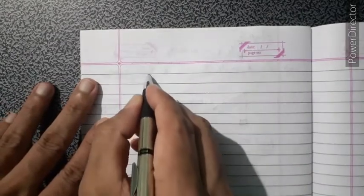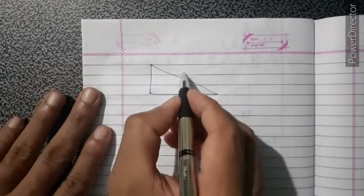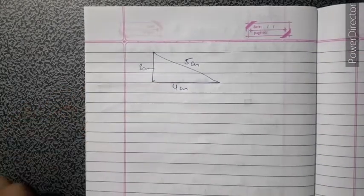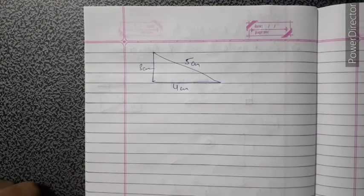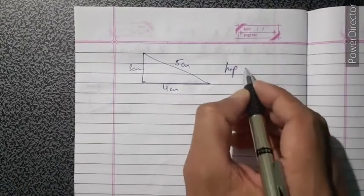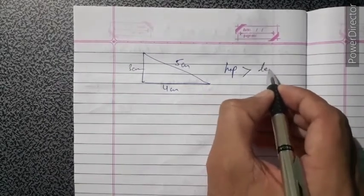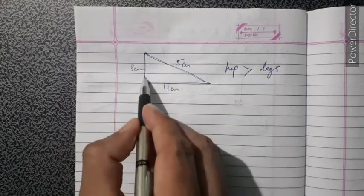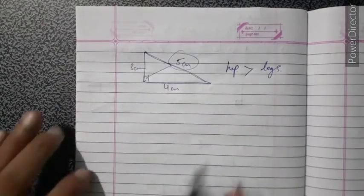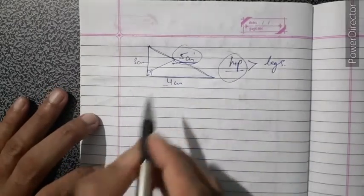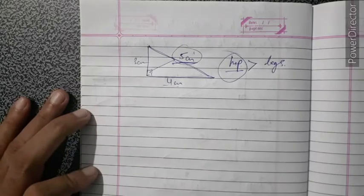For example, suppose a triangle has measurements of 5 cm, 4 cm, and 3 cm. Is the given triangle a right angle triangle? Always remember: the measurement of the hypotenuse is always greater than the legs. So among the three sides, the highest measurement is always the hypotenuse in a right angle triangle.